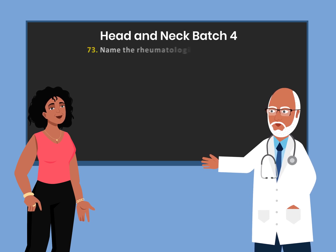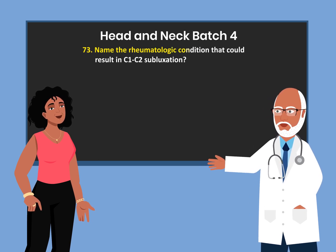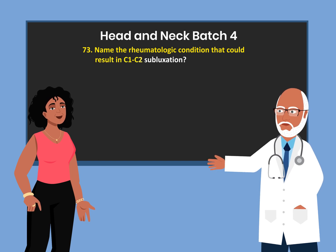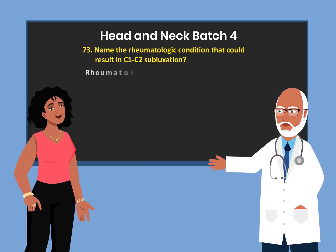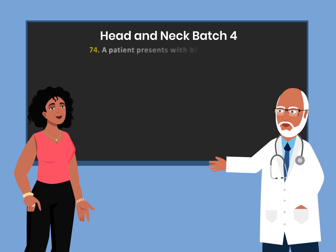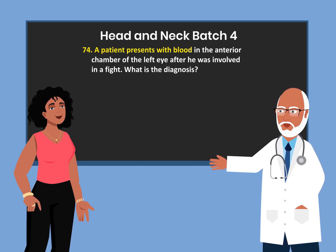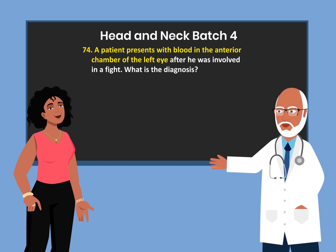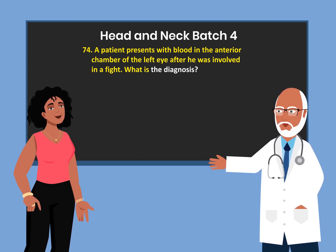Name the rheumatologic condition that could result in C1-C2 subluxation. Rheumatoid arthritis. A patient presents with blood in the anterior chamber of the left eye after he was involved in a fight. What is the diagnosis? Hyphema.